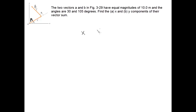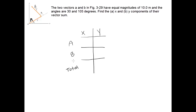It might sound a little complicated, but after some practice it's quite straightforward. We'll construct a table in which we break vector A into its x and y components, vector B into its x and y components, and then a row for the total. The question states that this angle is 30 degrees and that the magnitude of vector A is 10 meters — exactly the two pieces of information we need. It's helpful to redraw the vector off to the side to get it out of the way from the original picture.